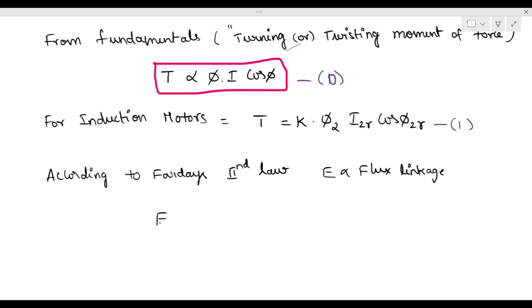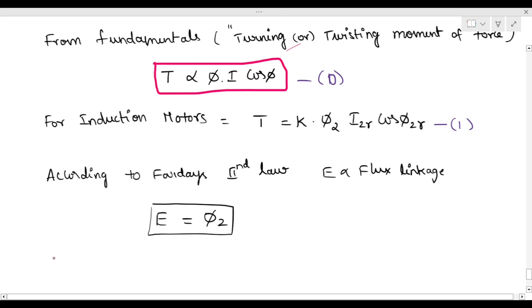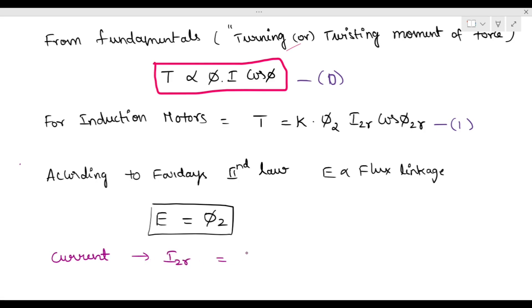So E is proportional to the formula for i₂. The current i₂r equals E₂r divided by Z₂r. So i₂r equals E₂r divided by Z₂r.